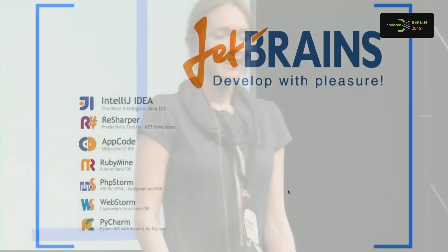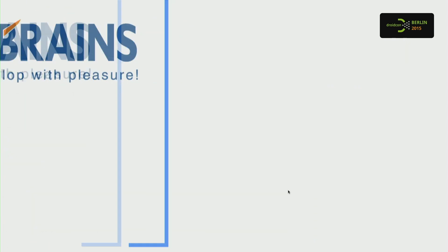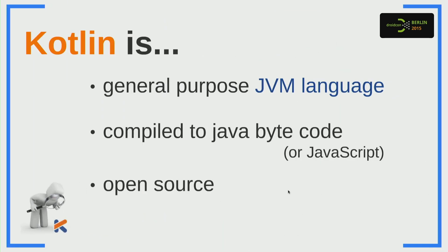JetBrains is mostly known as the creator of IntelliJ, but it has also created several different IDEs for different languages. That's why you shouldn't be surprised to hear that it decided to create its own language. Kotlin is a general-purpose JVM language. It is compiled to Java bytecode — though it has a JavaScript back-end as well, we'll focus on the JVM back-end. And it is an open source project.